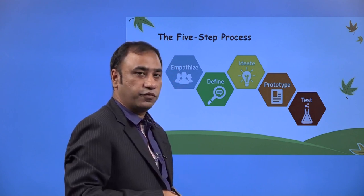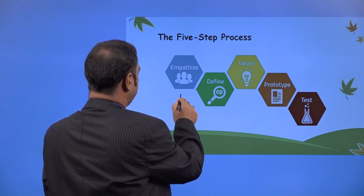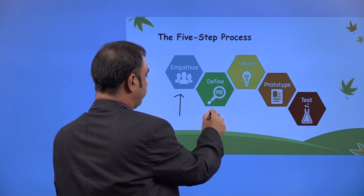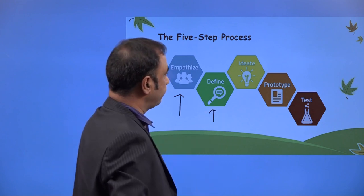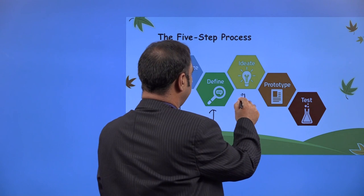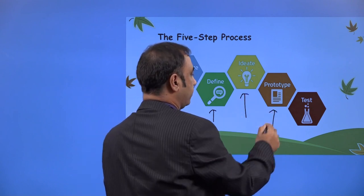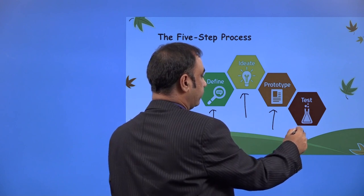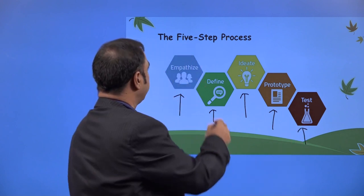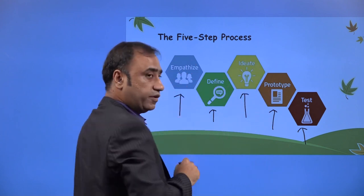What are the steps or processes for design thinking? Step number one: Empathize. Step number two: Define. Step number three: Ideate. Step number four: Prototype. Step number five: Test. These are the steps, and then there is an iteration which comes back to the beginning again.